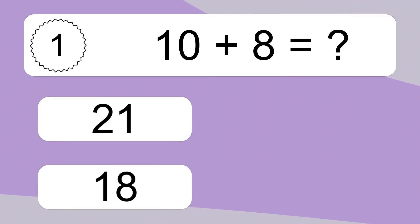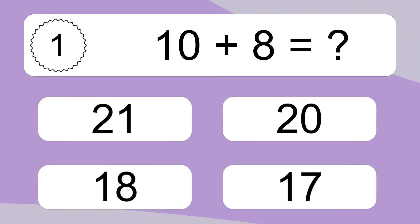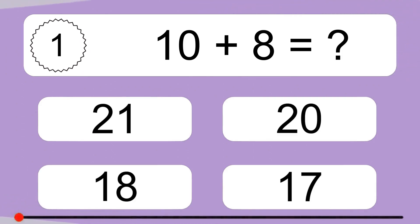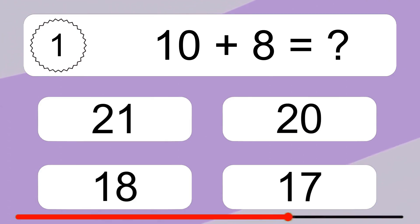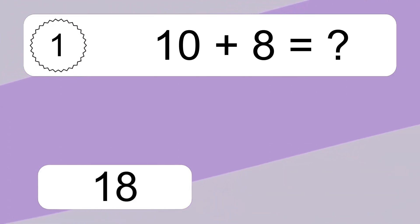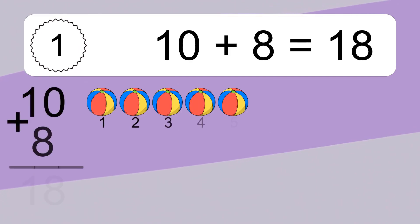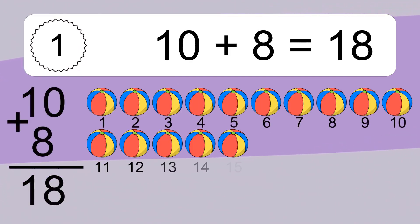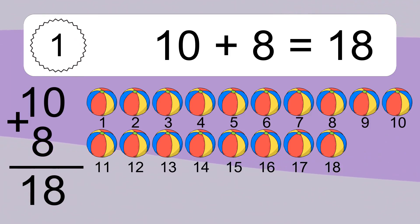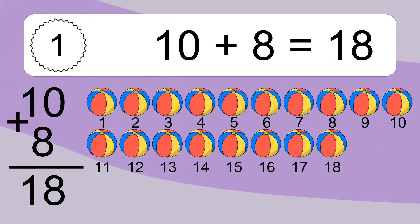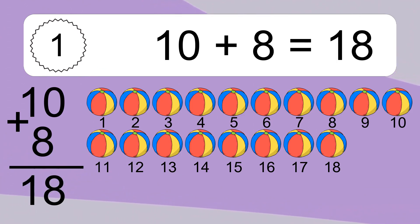10 plus 8 equals what? 10 plus 8 equals 18. Let's count it: 1, 2, 3, 4, 5, 6, 7, 8, 9, 10, 11, 12, 13, 14, 15, 16, 17, 18.